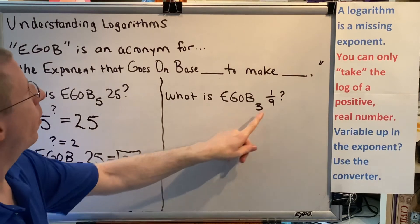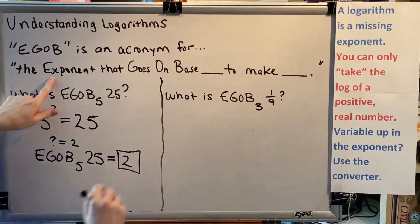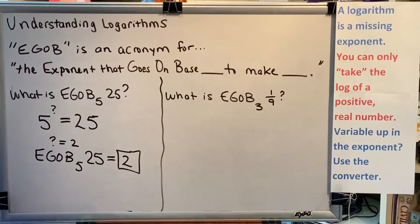What is EGOB 3, 1 ninth? Or said another way, what is the exponent that goes on base 3 to make 1 ninth?